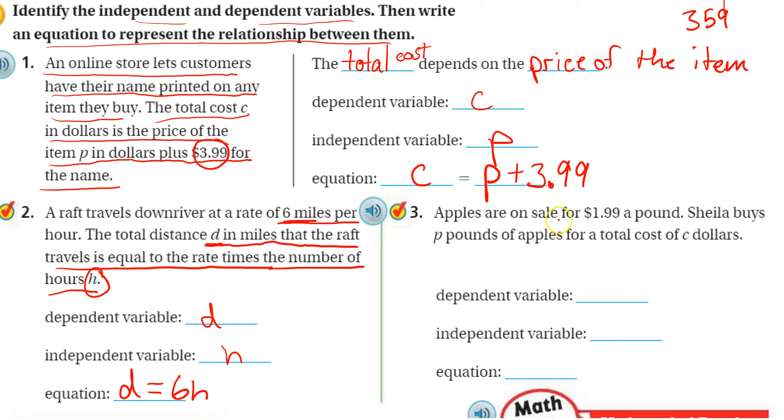Okay, number 3, apples are on sale for $1.99 per pound. Okay, so for every pound, it costs $1.99. So I know I'm going to have $1.99 times the number of pounds.